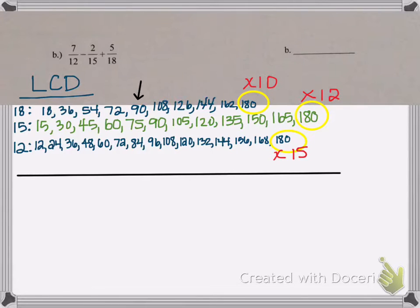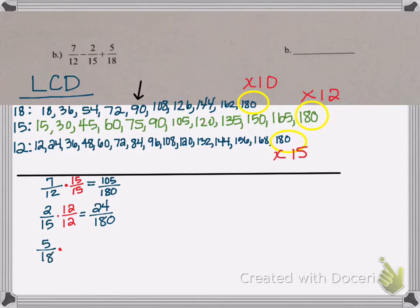Let's start writing our equivalent fractions. 7 over 12 is going to get multiplied by 15 over 15 to become 105 over 180. 2 over 15 is going to get multiplied by 12 over 12 to become 24 over 180. And 5 over 18 will get multiplied by 10 over 10 for 50 over 180.